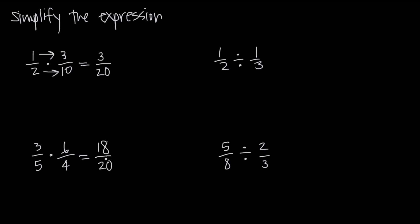Both the numerator and the denominator are even numbers, so we know we can divide both of them by 2. 18 divided by 2 is 9. 20 divided by 2 is 10. So we've reduced the fraction — we can't reduce 9/10 any further. So this is going to be our final answer.